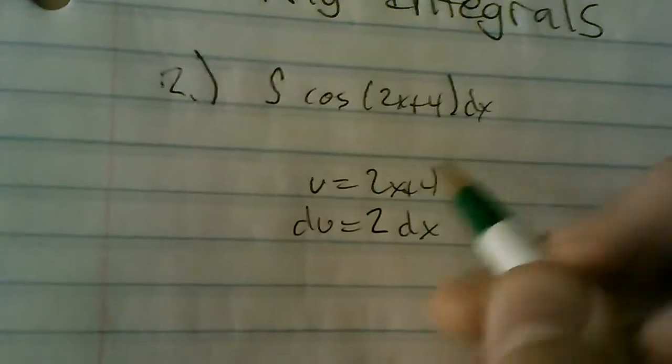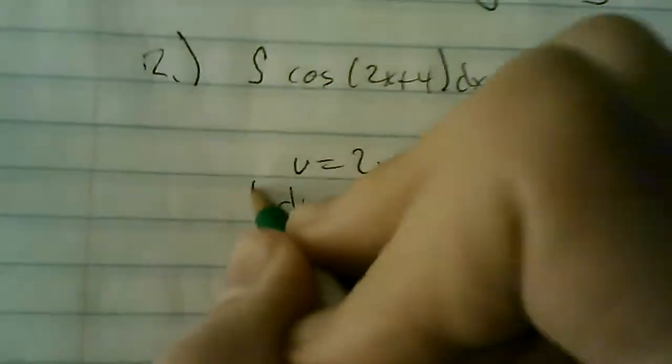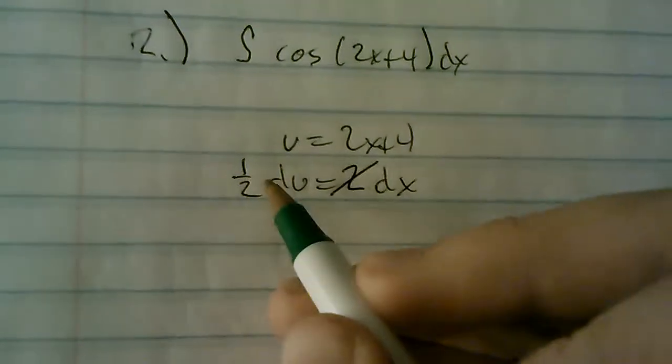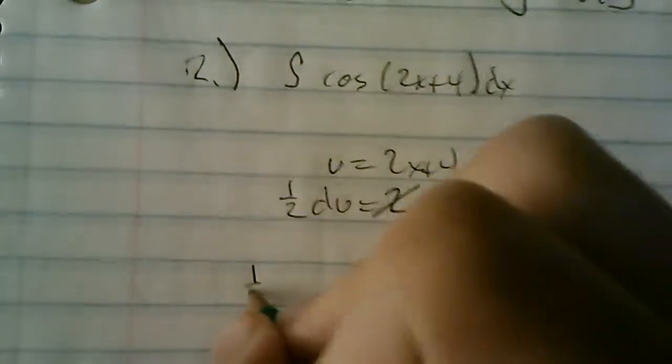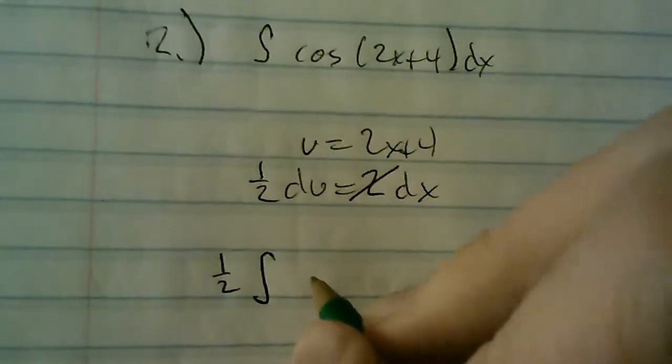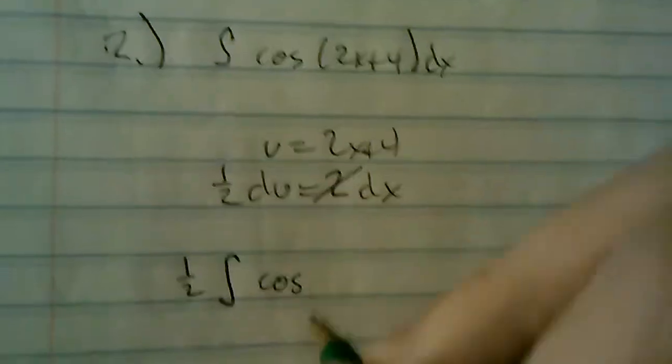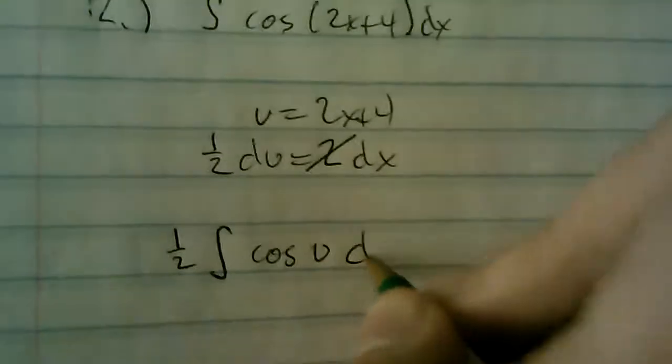Okay, so we don't have a 2dx up here, we only have a 1dx. So to make 2 one, we divide both sides by 2. So one half du equals dx. So when integrating, that one half just floats out to the front, because it's not a significant term. So we get one half cosine of 2x+4 equals u. Cosine of u du.